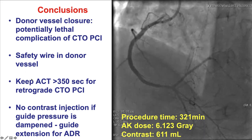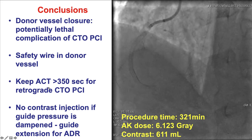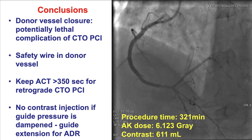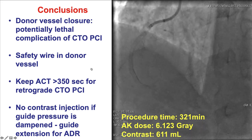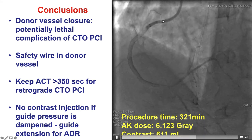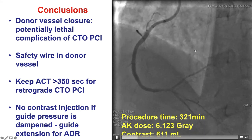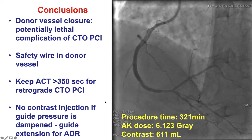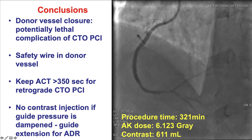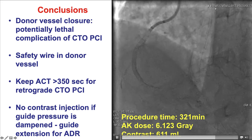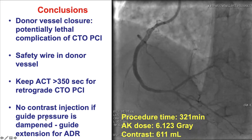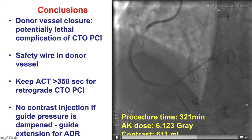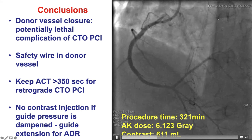One way to minimize this is to keep the activated clotting time high. For retrograde CTO PCI, keep it more than 350 seconds, whereas for antegrade, 300 seconds is commonly used. If there is any question of disease in the donor vessel, it is a good idea to perform intravascular imaging and, if needed, perform PCI in the donor vessel to minimize the risk of hemodynamic compromise. Contrast injection should not be done if there is dampening of the guide pressure, and after the guidewire is externalized, the donor vessel guide is typically disengaged and moved back into the aorta to minimize inadvertent dissections.